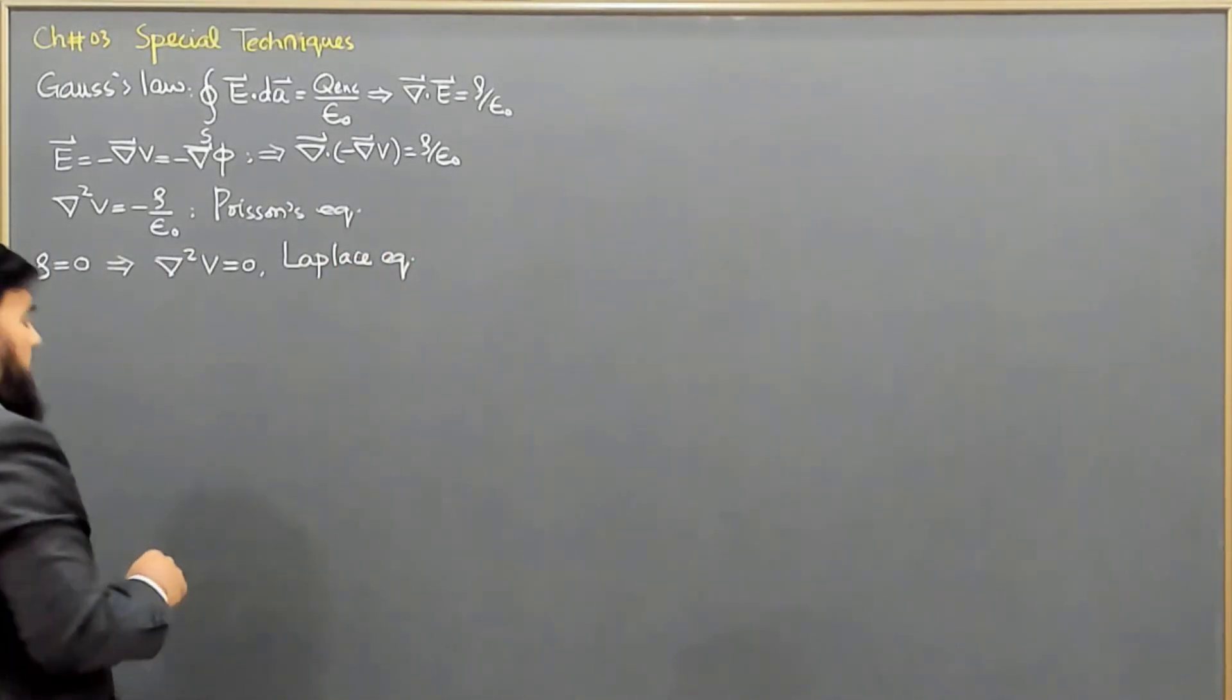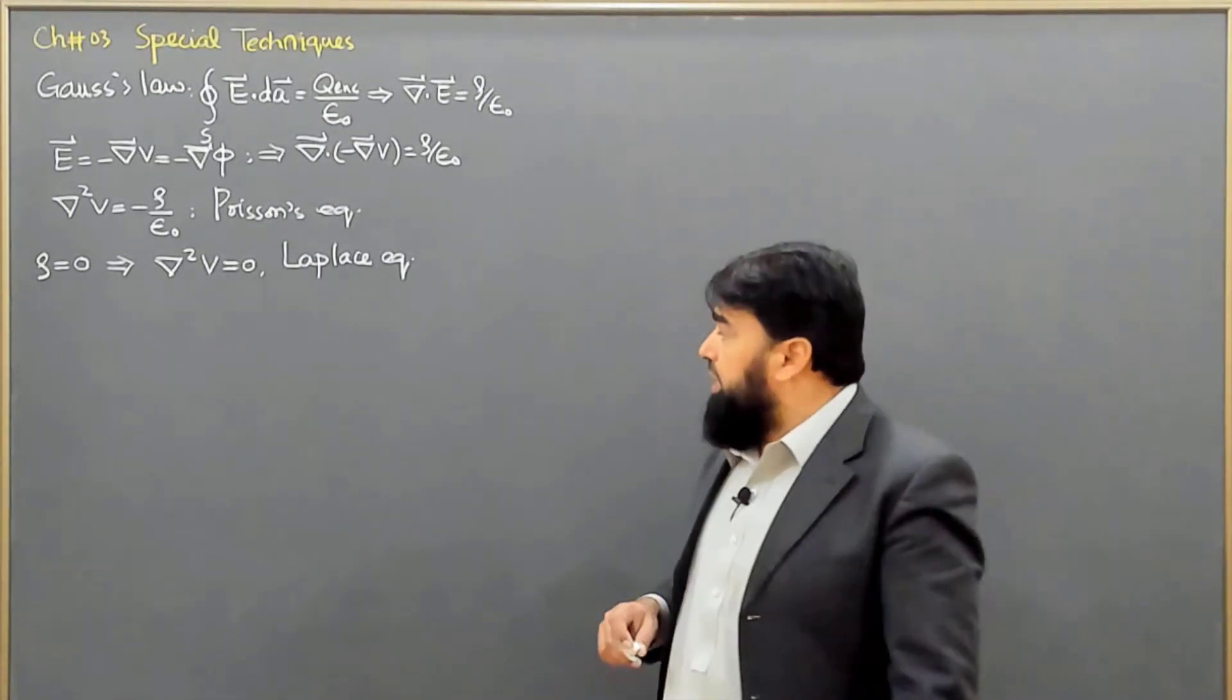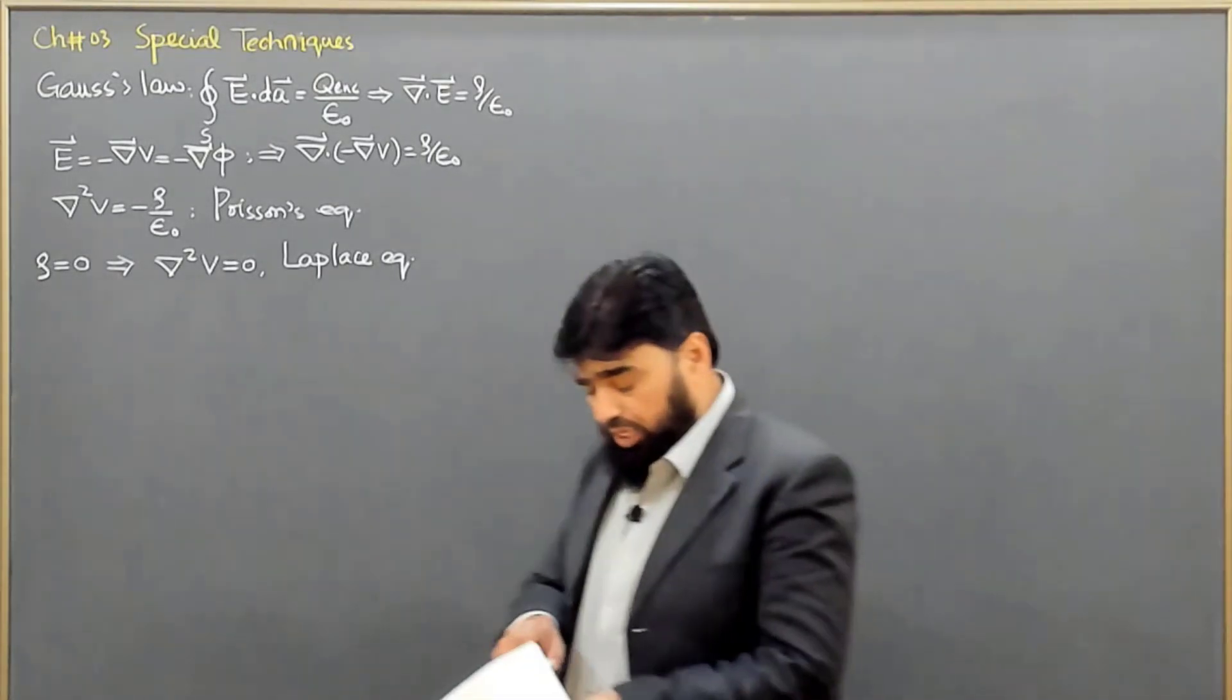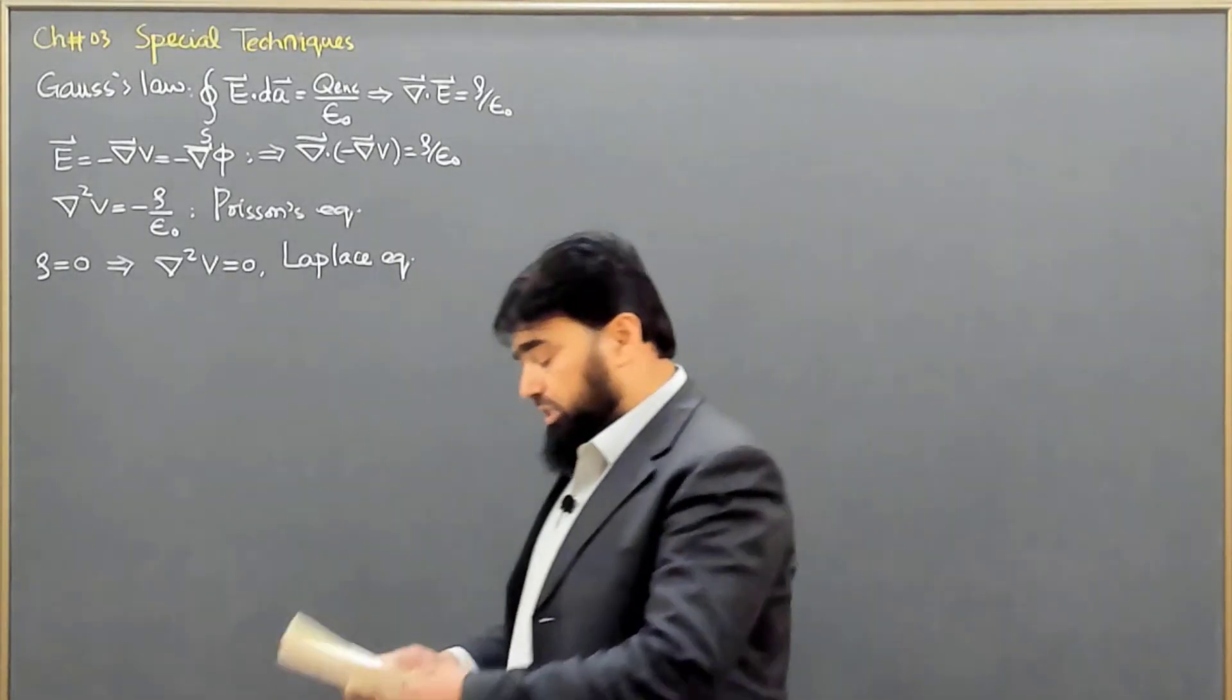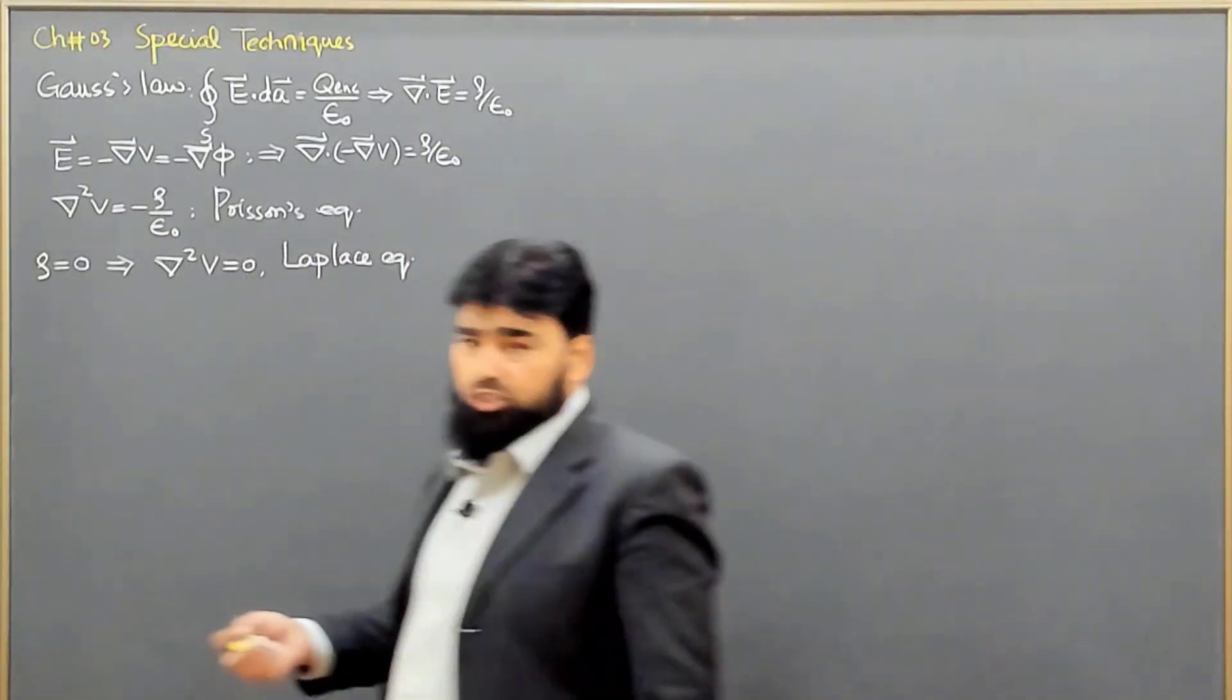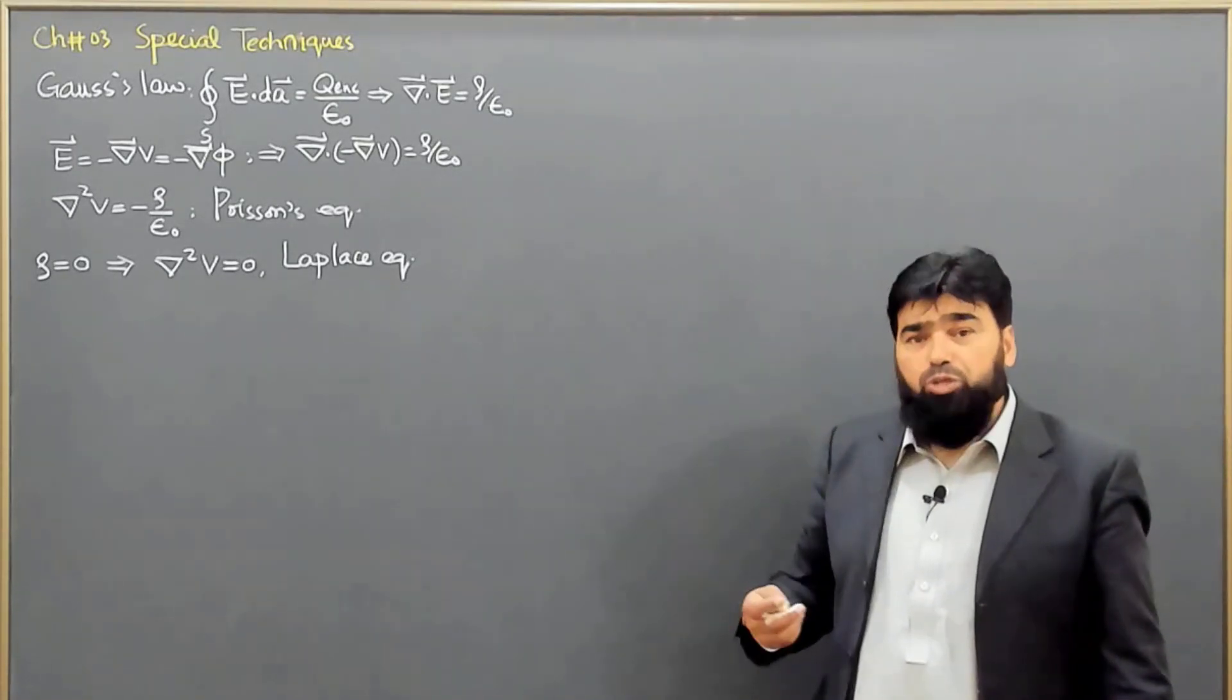So, in this situation, we will have rho equal to zero, and this will make the Poisson's equation is del square V equal to zero. And this we call is the Laplace equation. So, in all this chapter, we will basically solve the Laplace equation. So, in the beginning of this chapter, you will find some uniqueness theorems, boundary conditions, and things like that.